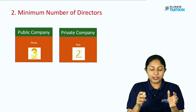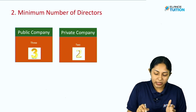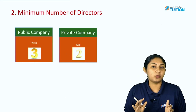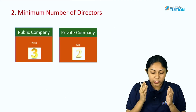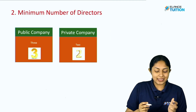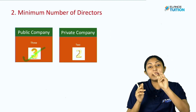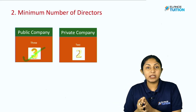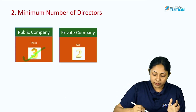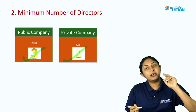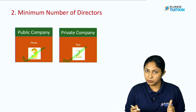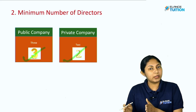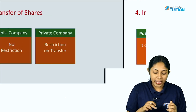The next basis of difference is the minimum number of directors. In the case of a public company, a minimum of 3 directors are required. For a private company, the minimum is 2 directors.